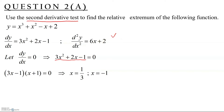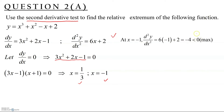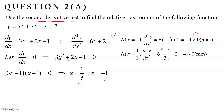We test both critical values. At x = -1: d²y/dx² = 6(-1) + 2 = -4, which is less than zero, indicating a maximum point. At x = 1/3: d²y/dx² = 6(1/3) + 2 = 4, which is greater than zero, indicating a minimum point.